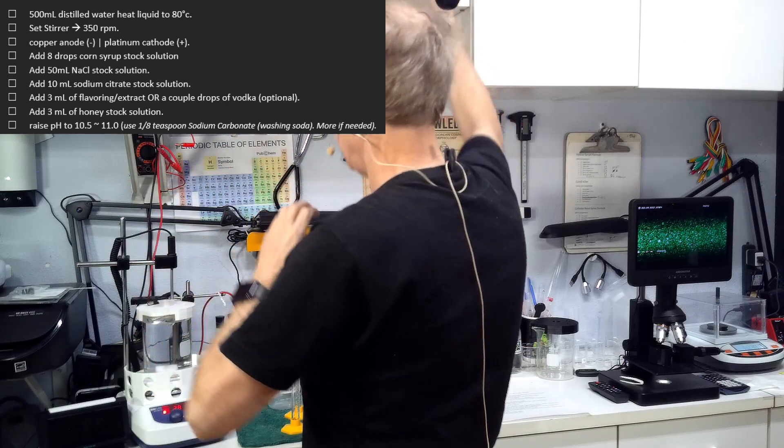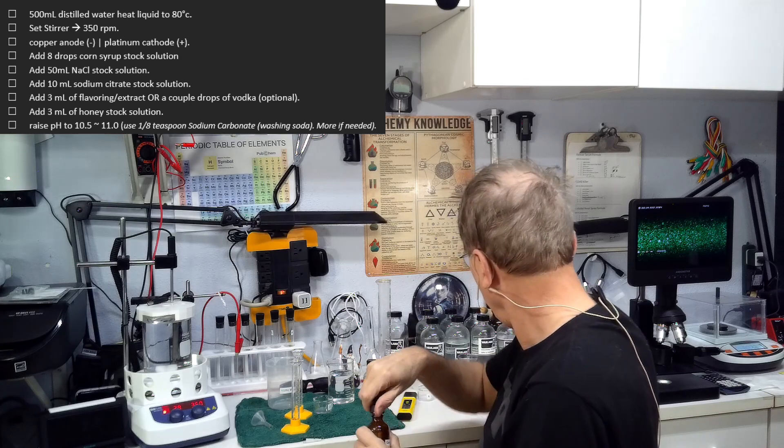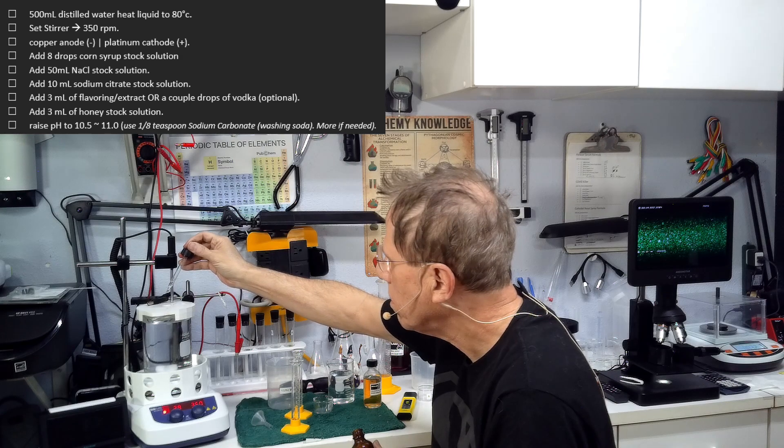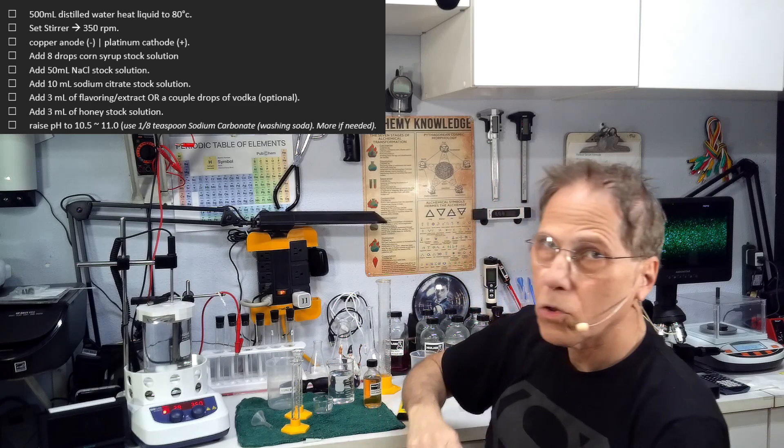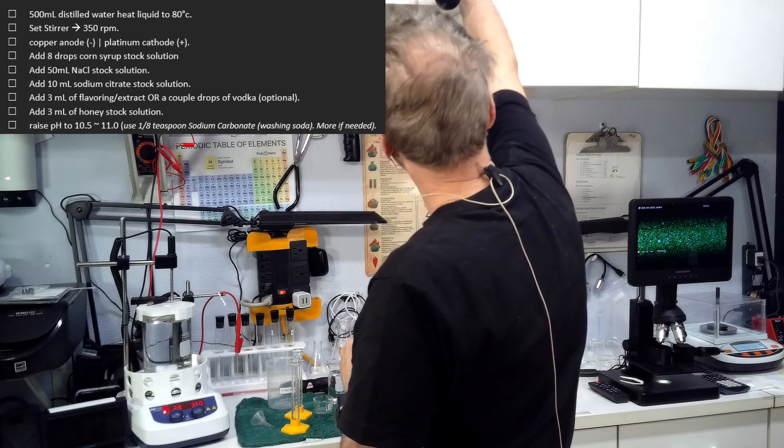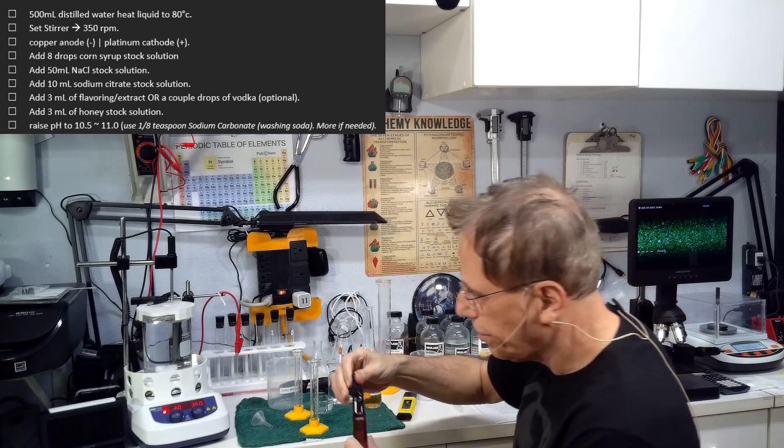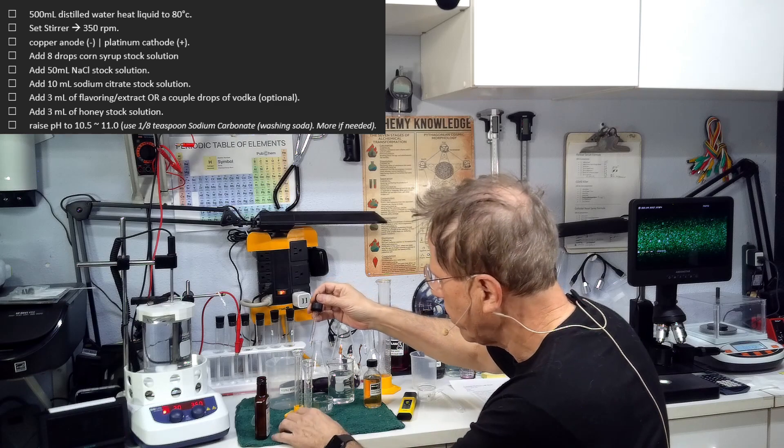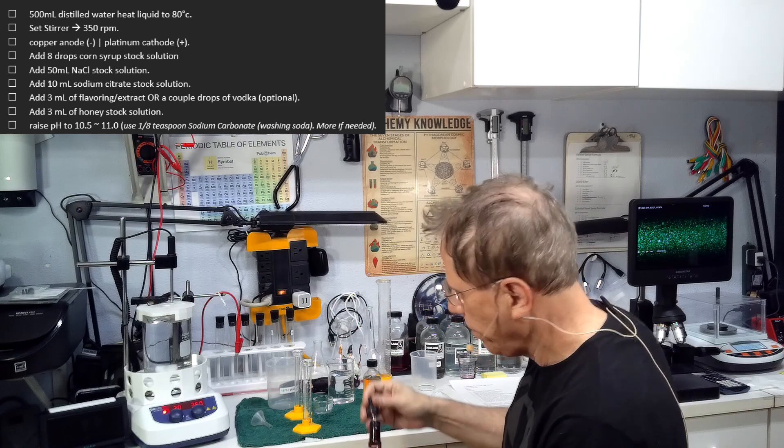We need the chlorine atom in the salt to help liberate the platinum. Corn syrup from our gold thing, we're going to use eight drops of corn syrup. Corn syrup helps bind the colloidals together.